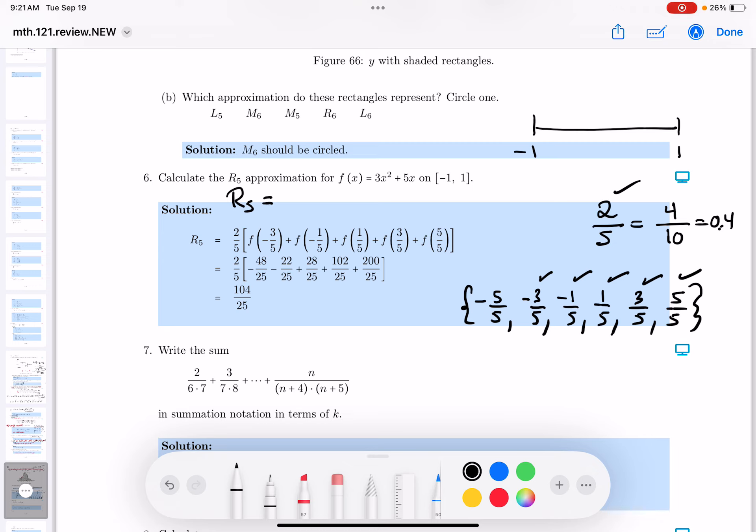Every base is equal to 2 fifths. And then what I do is I just simply evaluate these things at those values. And F is given. So it's going to be minus 3 fifths. We'll look at the key later. Plus F of minus 1 fifth.